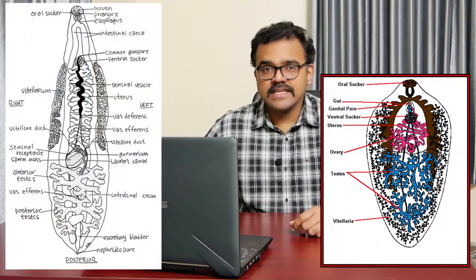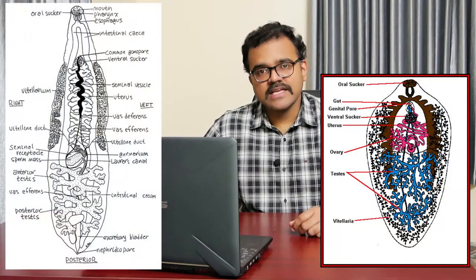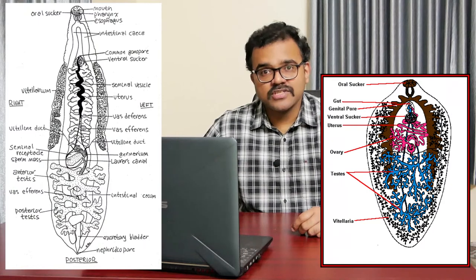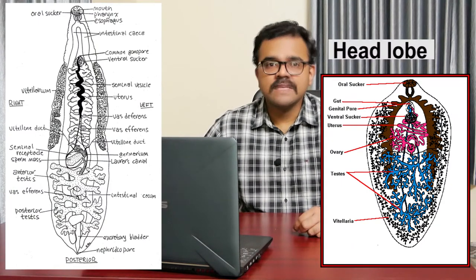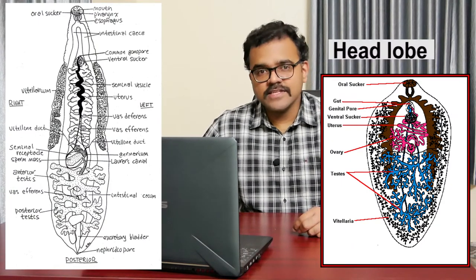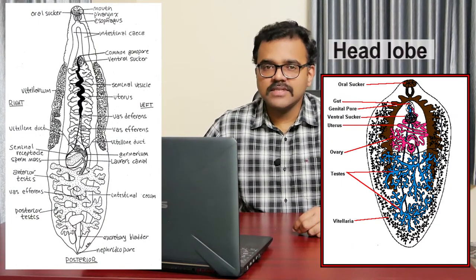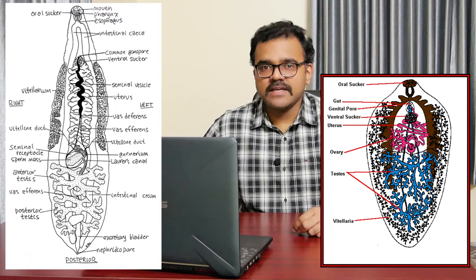The body of the liver fluke is soft, leaf-like, bilaterally symmetrical and dorso-ventrally flattened. The size varies from 1 millimeter to 3 centimeters in length. The anterior end of the body has a conical projection called the head lobe, at the end of which is a mouth surrounded by the oral sucker, or anterior sucker.